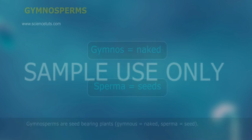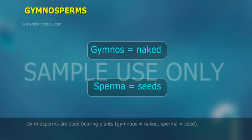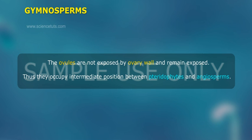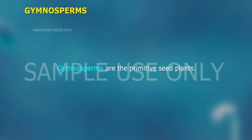Gymnosperms are seed-bearing plants. 'Gymnas' means naked and 'sperma' means seed. The ovules are not enclosed by an ovary wall and remain exposed. Thus, they occupy an intermediate position between pteridophytes and angiosperms. Gymnosperms are the primitive seed plants.